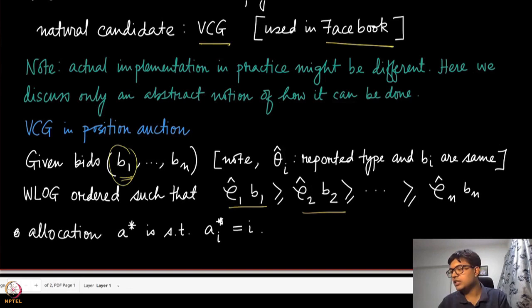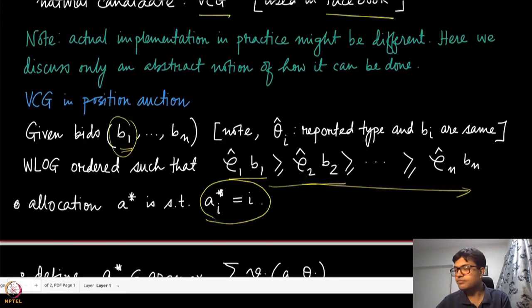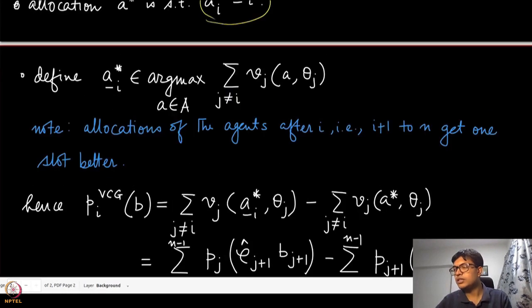The allocation is essentially the efficient allocation, which allocates these agents in this order. Now what we are going to define is this a minus i star. This is something that will be required whenever we are defining the VCG mechanism. If you are removing a specific agent, let's say agent i, then all the agents that were after that agent i, that is from i+1 to n, now start getting one better slot. Because the agents were sorted according to their ρᵢ hat times Bᵢ, if agent i is not present now, all the other agents starting from i+1 to n will now get allocated one slot above because that is now empty.